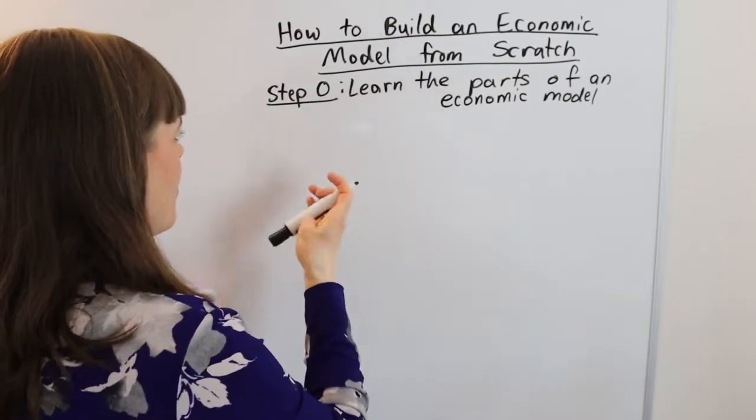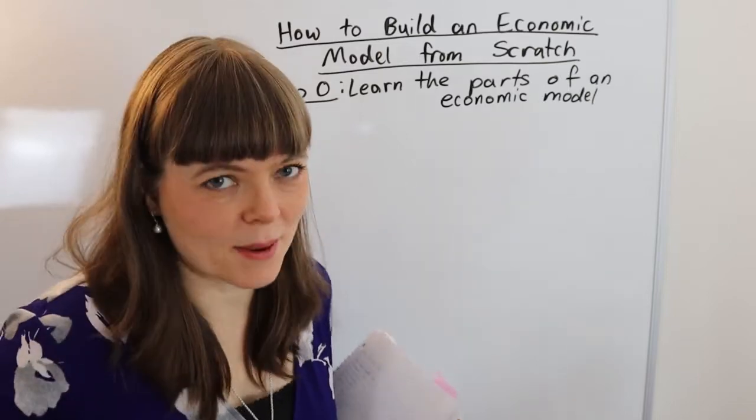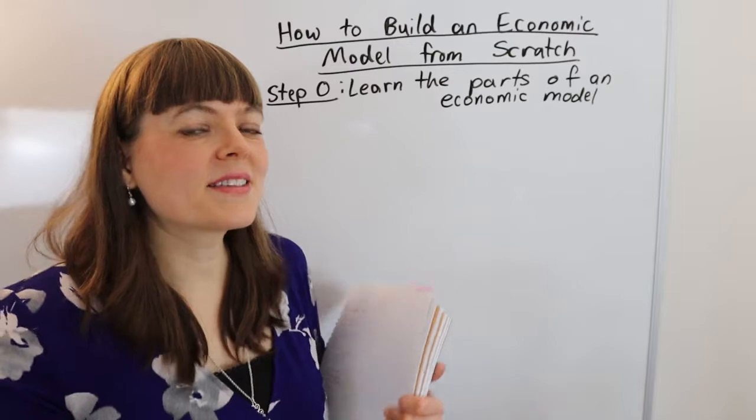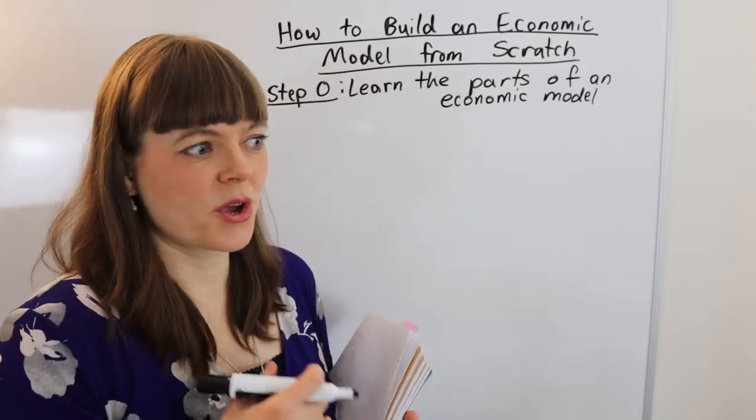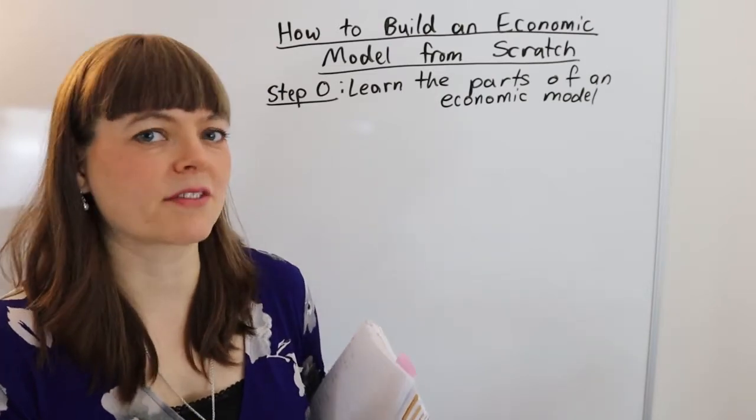Once you've got those down, then you can actually build your model. So the first real step in building an economic model is to figure out what is the choice variable. And of course, to do that, you're going to have to figure out whose decision are you modeling? And what do they actually have control over?